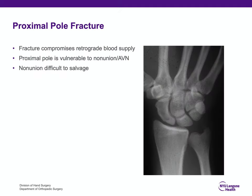The scaphoid has an unusual blood supply from distal to proximal, so the more proximal you are in the scaphoid, the poorer the blood supply. Therefore, the proximal pole fracture has compromised blood supply, making the proximal pole vulnerable to nonunion and avascular necrosis. We now have an armamentarium of vascularized bone grafts for proximal pole nonunions and avascular necrosis because of the poor blood supply.